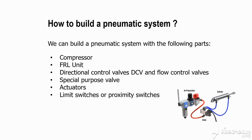The regulator is used to control pressure. For example, if your application needs only 5 bar but the compressor gives 12 bar, you use the regulator to reduce it from 12 bar to 5 bar. The lubricator adds lubrication to the air flow. When air passes through valves or cylinders, lubrication reduces friction.